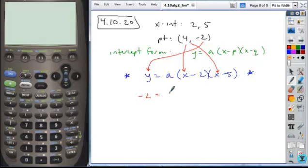So negative 2 is equal to a times 4 minus 2 times 4 minus 5. And when you work to simplify this, 4 minus 2 is 2.